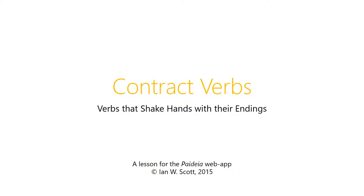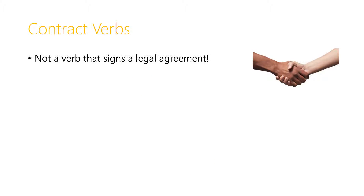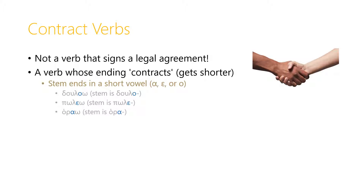Hi and welcome back again. In this video we'll be looking at a particular class of verbs called contract verbs. These are verbs that shake hands with their endings. A contract verb is not a verb that signs a legal agreement — it's a verb whose ending contracts, gets shorter. The reason for this is that the stem for these verbs ends in a short vowel: alpha, epsilon, or omicron.